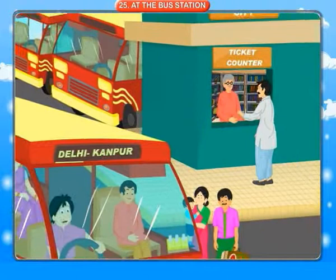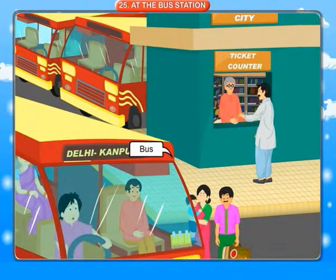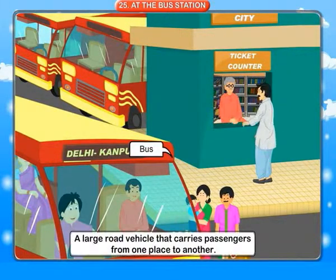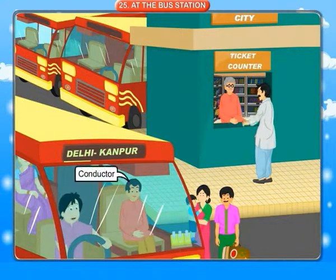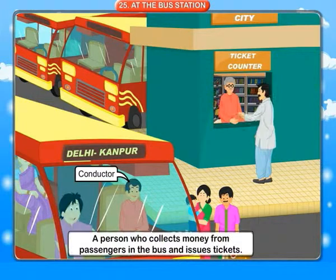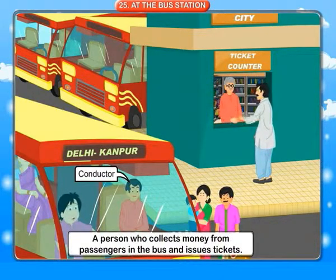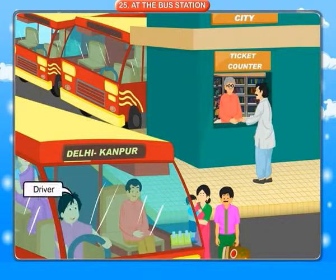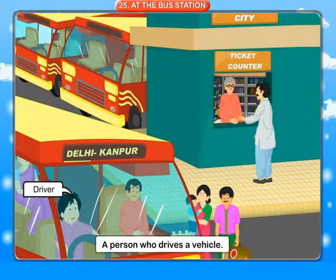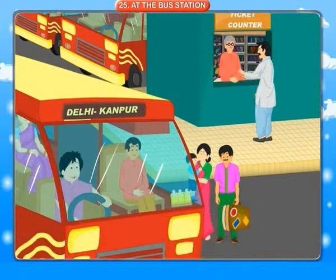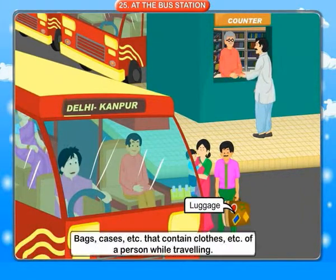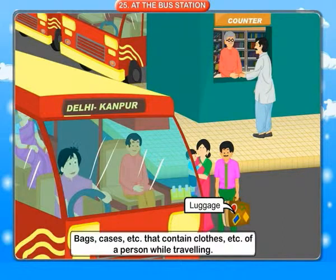At the bus station. Bus: a large road vehicle that carries passengers from one place to another. Conductor: a person who collects money from passengers in the bus and issues tickets. Driver: a person who drives a vehicle. Luggage: bags, cases, etc. that contain clothes and belongings of a person while traveling.